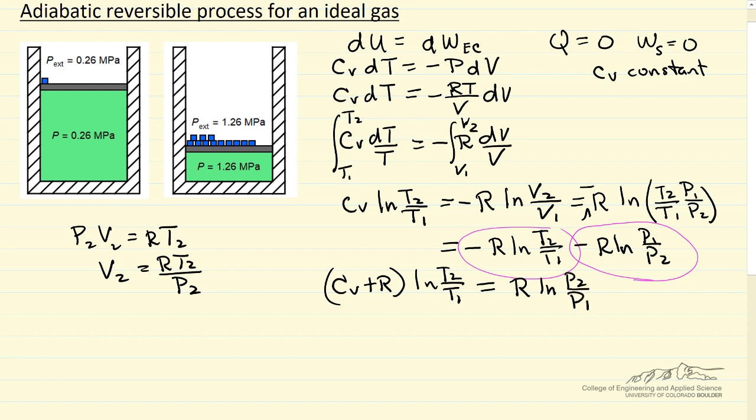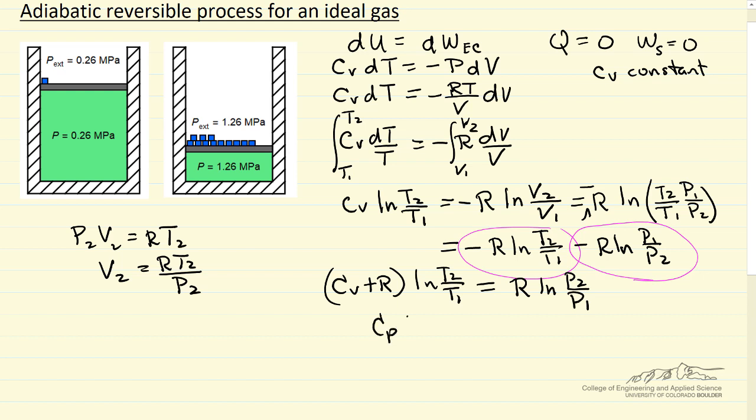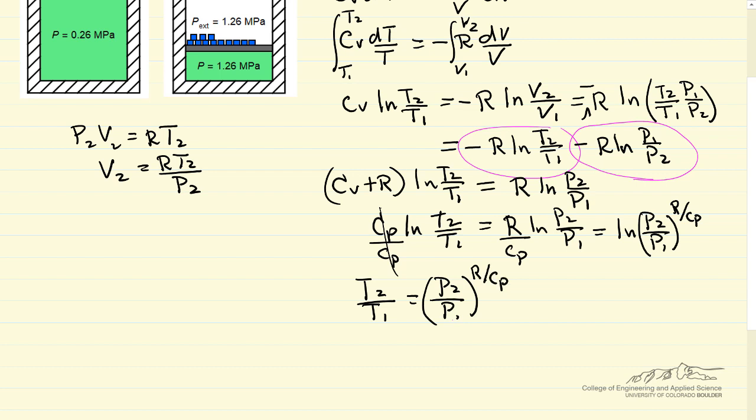Well, cv plus r for an ideal gas is cp. What I'm gonna do is divide both sides by cp. So this is one. And again, using property of logs, r over cp becomes an exponent. Now if I take an exponent of both sides of this equation, I have t2 over t1 equals p2 over p1 raised to the power of r over cp. And so this is the equation that we're interested in.